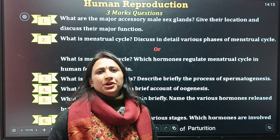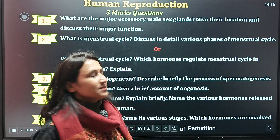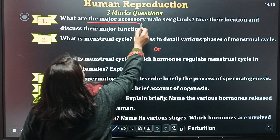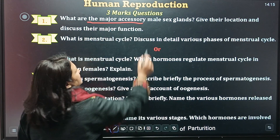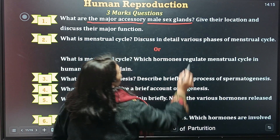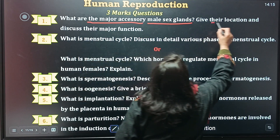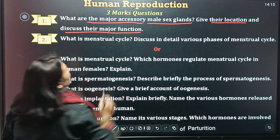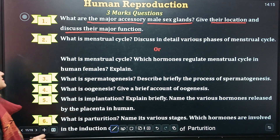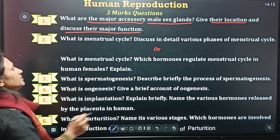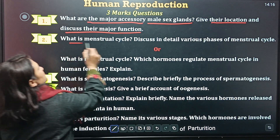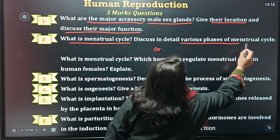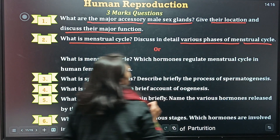These questions carry three marks. Question number one is: what are the major accessory male sex glands? Give the locations of these glands and discuss their major functions. Next question: what is the menstrual cycle? Discuss the various phases of the menstrual cycle.